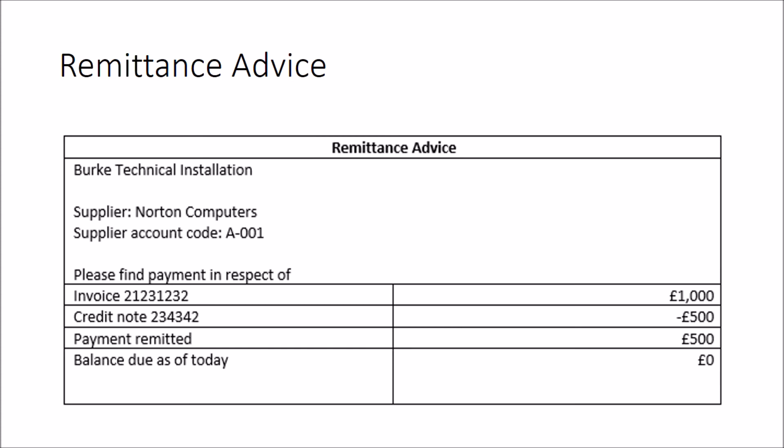We may provide remittance advices of payments to suppliers showing the balance we think we owe. The supplier will check this against their sales ledger to see if there are any differences or misunderstandings. Areas such as early payment discounts, missing invoices, and transposition errors on invoices are good areas for exam questions where disputes might arise.